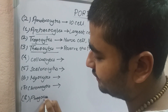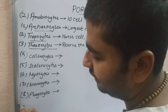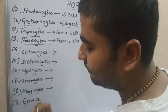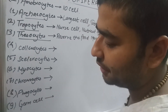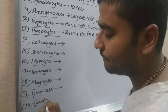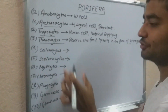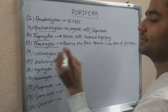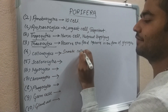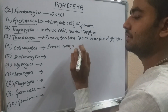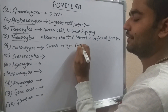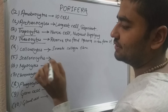Besides these, there are Choanocyte cells and Pinacocyte cells. Discussing their function: Pinacocytes secrete collagen — they are collagen-secreting cells.